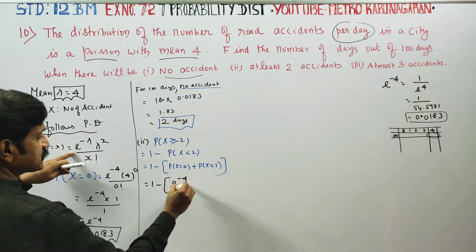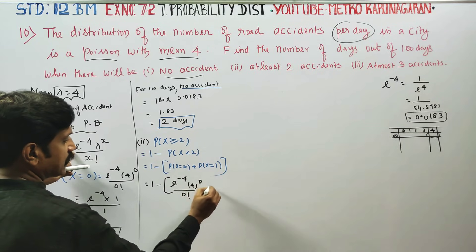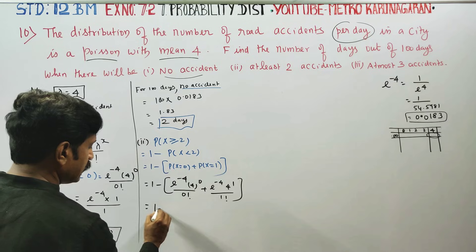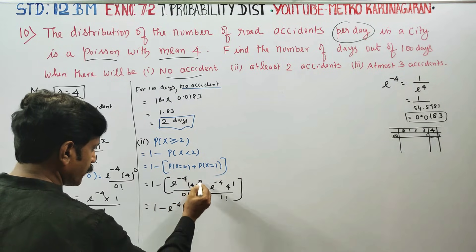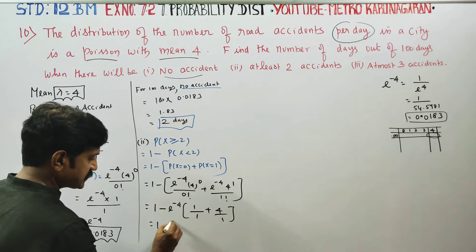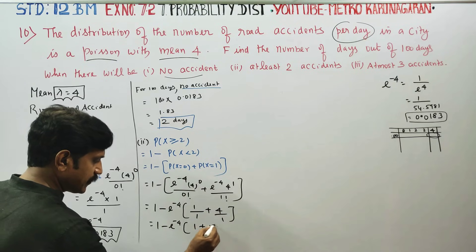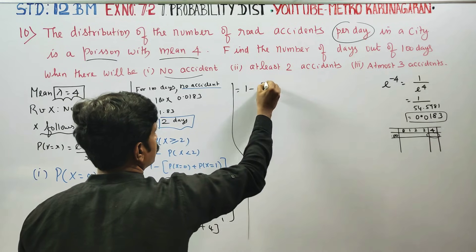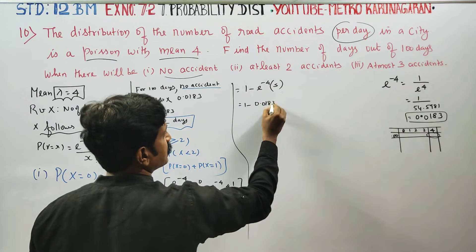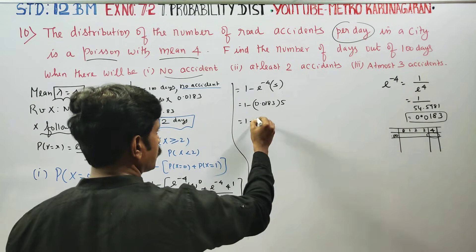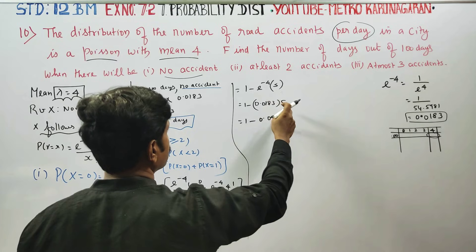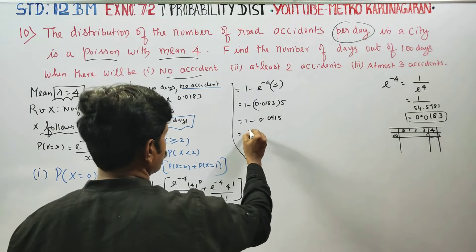Substituting values: P(X=0) = e power minus 4 times 4 power 0 by 0 factorial, and P(X=1) = e power minus 4 times 4 power 1 by 1 factorial. Since 4 power 0 is 1, 0 factorial is 1, 4 power 1 is 4, and 1 factorial is 1, we get 1 minus e power minus 4 times (1 plus 4), which is 1 minus 0.0183 into 5, giving 1 minus 0.0915, equal to 0.9085.